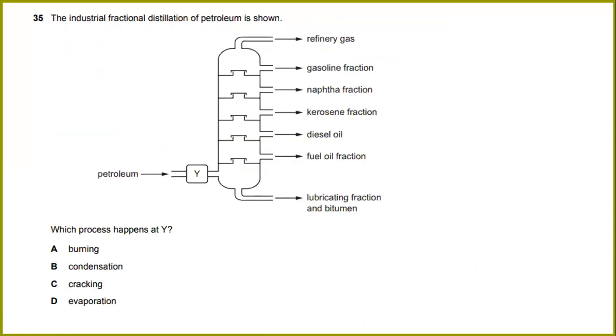The industrial fractional distillation of crude oil is shown. What process happens at X, Y, and Z? This is the process of evaporation.